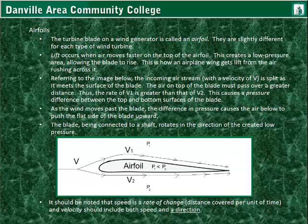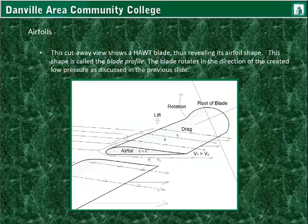You can get rotation with a single blade, but then it requires balancing. Just as a note, velocity is a rate of change with direction — so it's speed and direction combined. This shows what the cutaway looks like: you have the blade going out to the tip, and the root of the blade mounts to what's called the hub. The rotation would be in this direction.